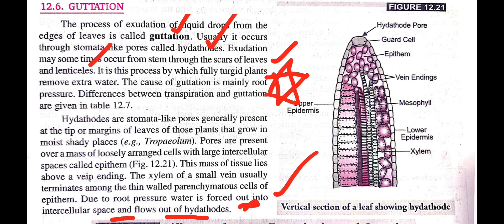Hydathodes are a special kind of pore, generally called water stomata, through which guttation or exudation of liquid occurs. This is all about guttation. This diagram shows the structure or vertical section of a leaf showing hydathodes.